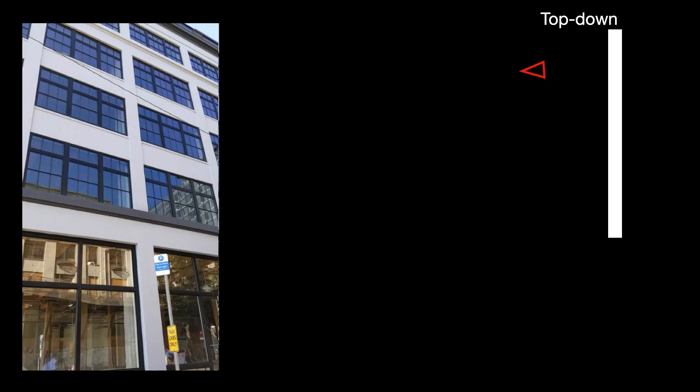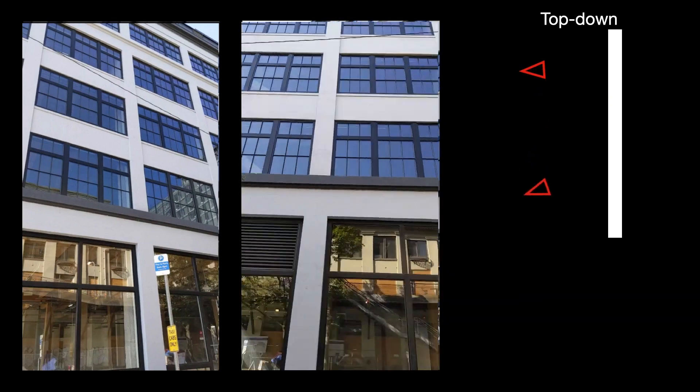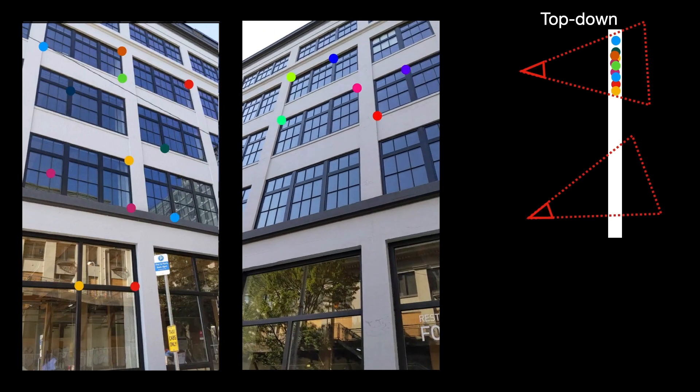For instance, if this is our first frame and we start walking around the building, very soon our frames won't be observing the same part of the scene, so there won't be any shared feature tracks, and thus no direct constraints between this pair of frames.